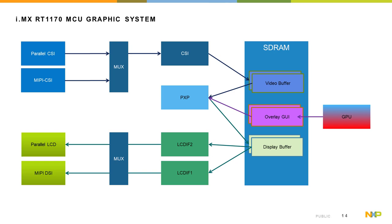Taking a closer look at the graphics subsystem, the i.MX RT1170 contains multiple camera and display interfaces, a PXP graphics accelerator, and a 2D GPU supporting OpenVG and vector graphics operations. The device supports both MIPI and parallel camera and display interfaces. Starting with the camera interface or CSI block, this supports both parallel CSI and MIPI CSI. Through the video mux, either imaging signal can be routed to the CSI block for processing, and in addition to forming image data, the CSI block can also provide histogram and quantization functionality.